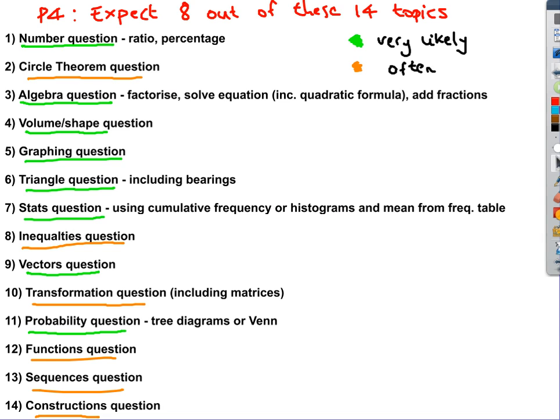So it's worth noting this is the 0580. You can pause this video to have a look through all these. These are the different topics that are likely to come up on a Paper 4. If they're highlighted green, they're very likely. Orange, they come up often. I'll make a video on most of these topics.